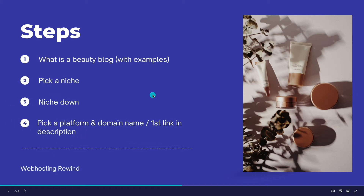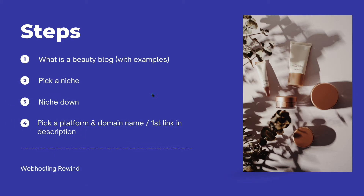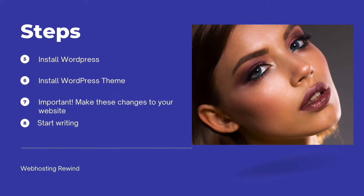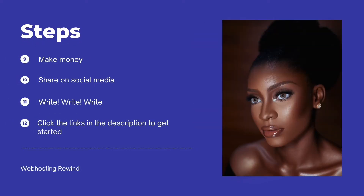Today I'm going to give you an example of what a beauty blog is, show you how to pick a niche because beauty isn't really a niche — it's just an idea or a topic — and then why you should niche down in the beginning. I'm going to help you pick a platform and a domain name, go through the process of installing WordPress, install a WordPress theme, and make very important changes. If you don't make these changes, you can run into trouble getting traffic and potentially making money. After that, we'll talk about writing and the best way to write so you can actually make some money, different ways to make money with your blog, why you should share it on social media, and how much you should write before thinking about other avenues.